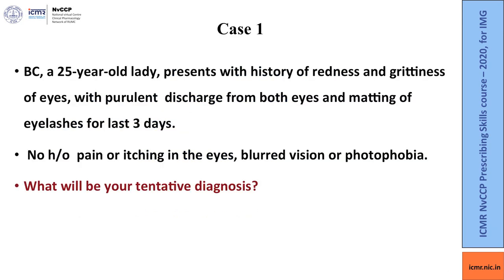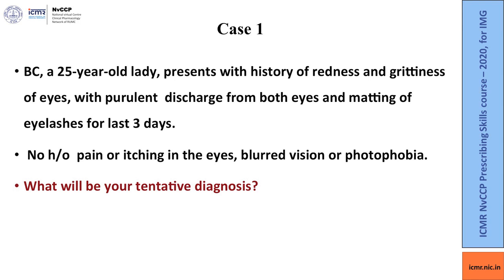So let's begin with our first case. This is a 25-year-old lady who has presented with a history of redness and grittiness of eyes with purulent discharge from both eyes leading to matting of eyelashes for the last three days. There is no history of pain or itching in the eyes, blurred vision or photophobia. What will be your tentative diagnosis? This is a case of conjunctivitis. I hope you can appreciate the hyperemia and the discharge in the eyes.